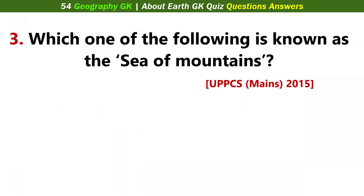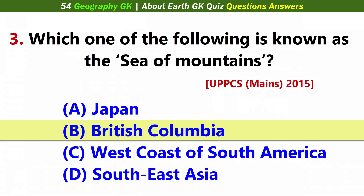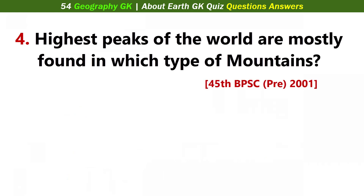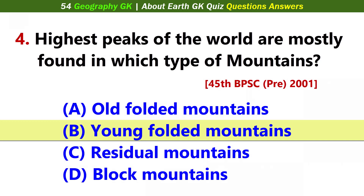Which one of the following is known as the Sea of Mountains? Answer B: British Columbia. Highest peaks of the world are mostly found in which type of mountains? Answer B: Young Folded Mountains.